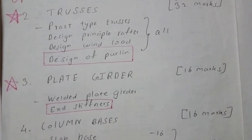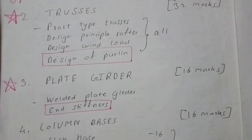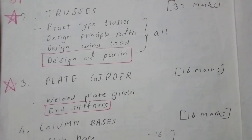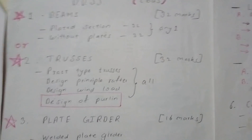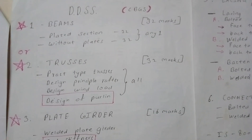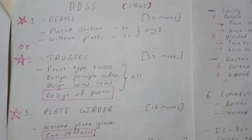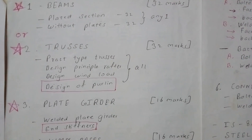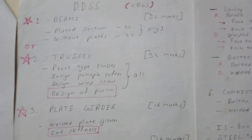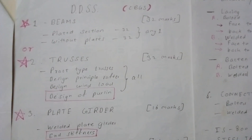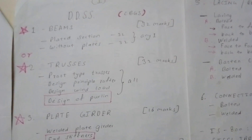Drawing accounts for 30 to 40 percent of marks, so we can expect 9 to 11 marks for the plate girder question. Combined with 20 to 24 marks from the first question, you can pass DDSS by doing any one of the first two topics and the compulsory plate girder question.